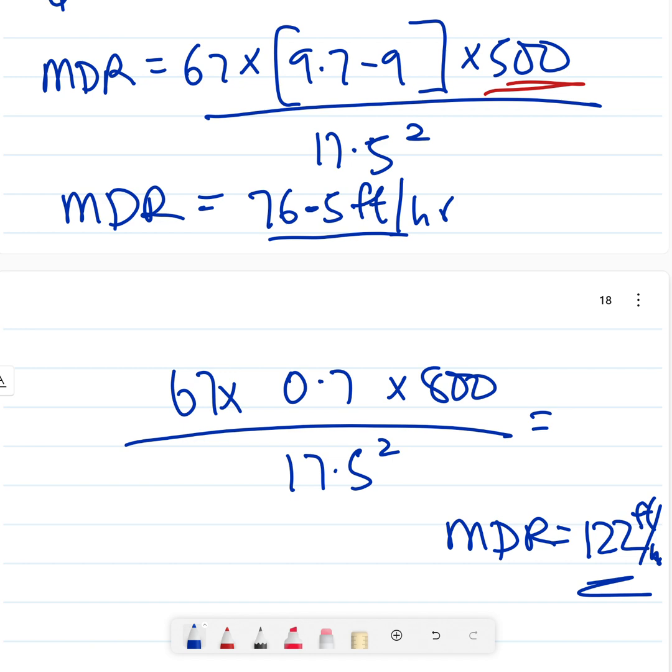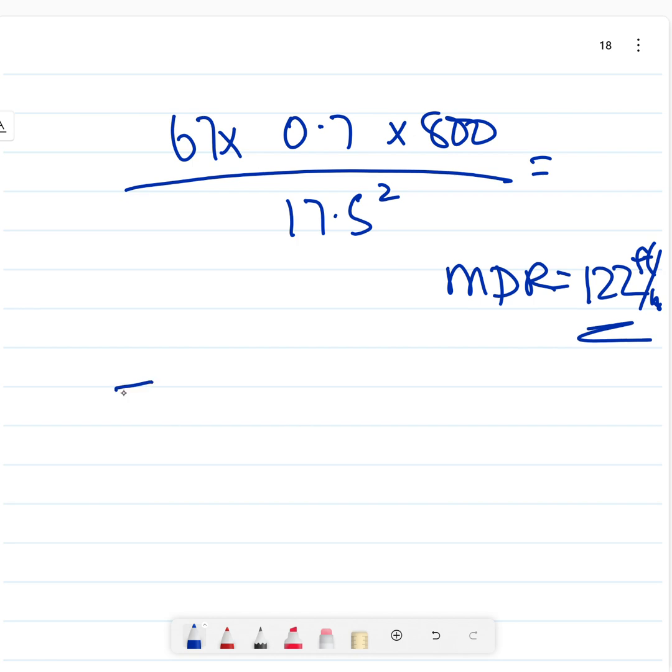Why? Because you're able to clean the hole quicker. If you try the same calculation for 1,000 gallons per minute, you will notice that your MDR increases to about 153 foot per hour.